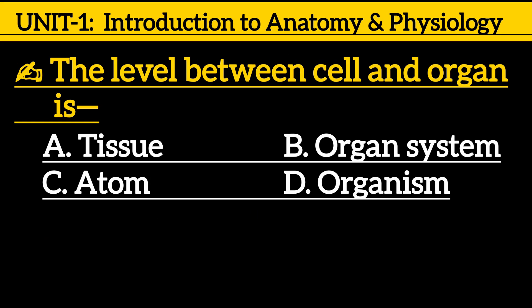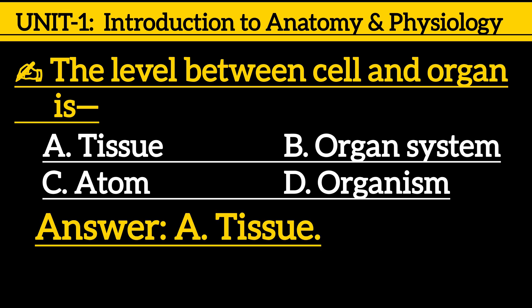Next one: The level between cell and organism — option A: tissue, option B: organ system, option C: atom, option D: organism. The correct answer is option A: tissue.